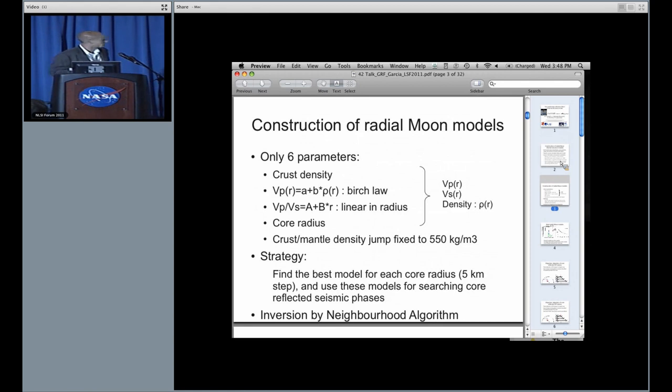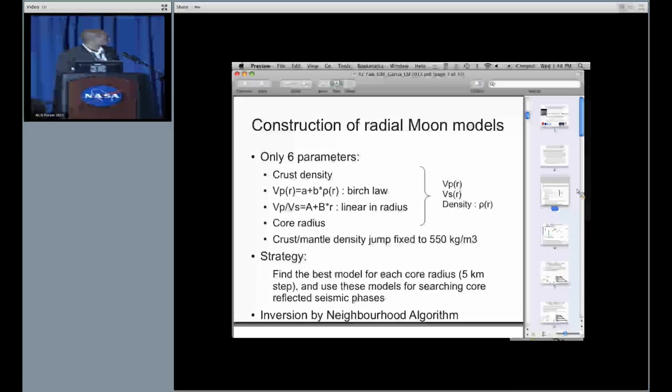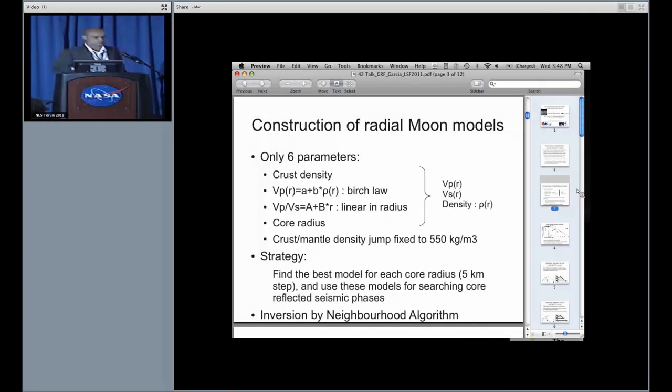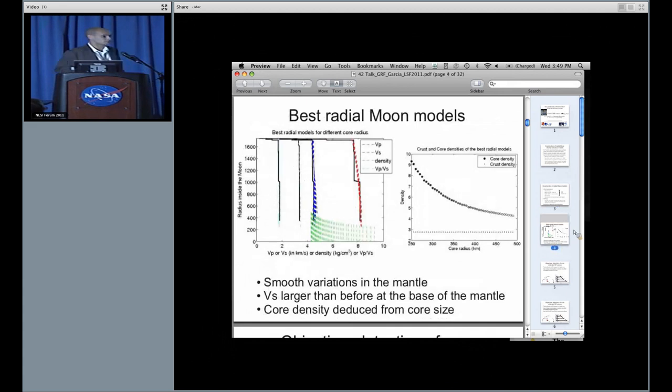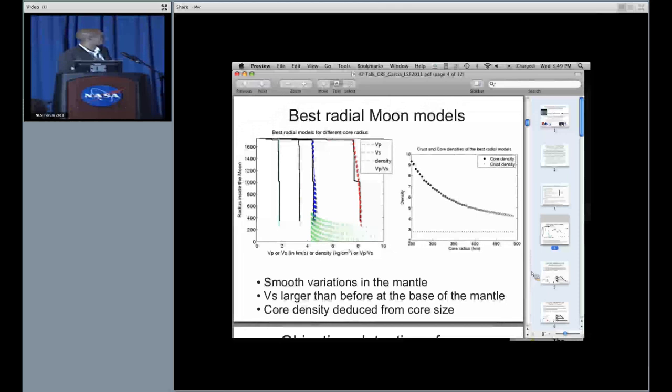We are able to construct a radial model with only six parameters: the crust density, the parameters of Birch's law, the parameters of linear variation of radius of VP over VS, and the core radius. We fix the crust-mantle density jump to some value. The strategy will be to find a best model for each core radius and then to use this model to search core reflected seismic phases. Here are the best radial moon models. I should say that all these models fit almost equally both seismic and geodetic data. We obtain smooth variations inside the mantle for both P, S and density. We obtain larger VS velocities at the bottom of the mantle and we deduce the core density from core size by fitting the luminance.